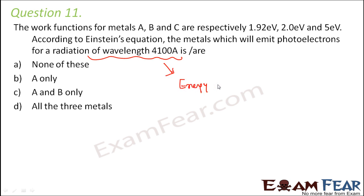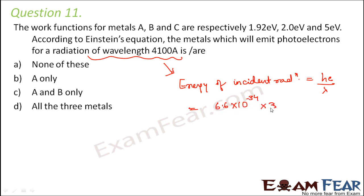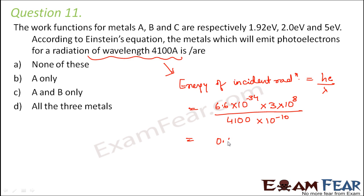The energy of the incident radiation will be equal to hc by lambda. H is Planck's constant which is 6.6 × 10⁻³⁴, c is 3 × 10⁸, divided by lambda which is 4100 Angstrom — we multiply by 10⁻¹⁰ to convert to meters. Solving this, we get 0.0048 × 10⁻¹⁶ joules.